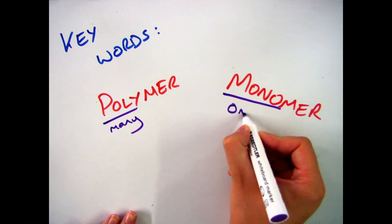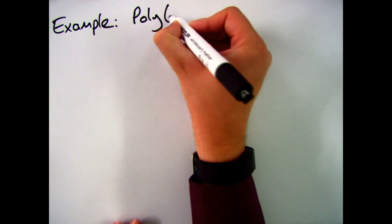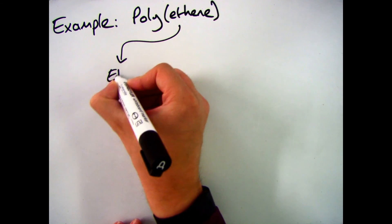Polymer means many molecules joined together and monomer means one on its own. So if we use the example of polyethene then,